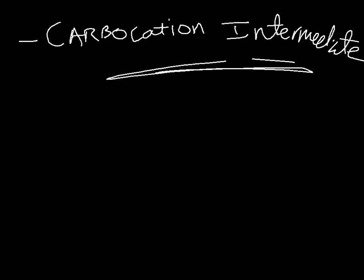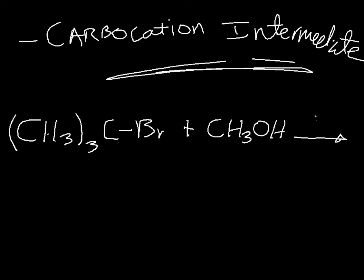So let's run through an example, and this is going to be a pretty typical example. We are going to have a central atom with three methyl groups on it and a halogen, and we are going to react it with, let's do methanol, and it's going to be heat.